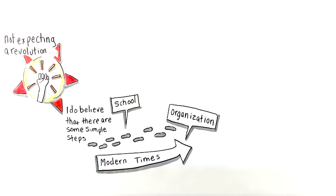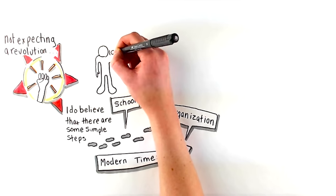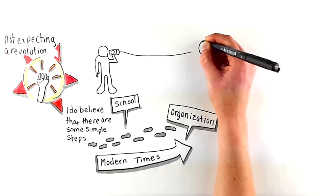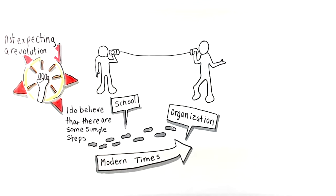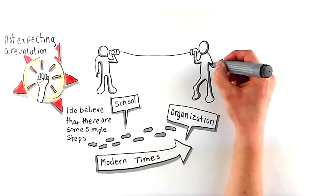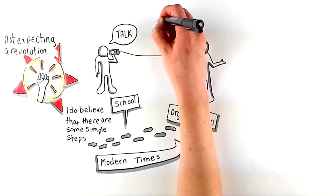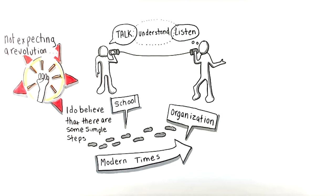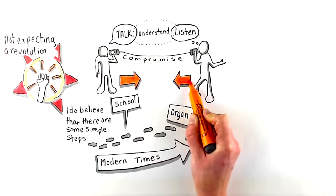And by schools taking these steps, we will be instilling the values in young people which will equip them for modern times. As we interact with more and more people through our fast-paced, complex modern lives, we will know how to talk, listen, understand, compromise, and generally just get on with each other for mutual advantage.